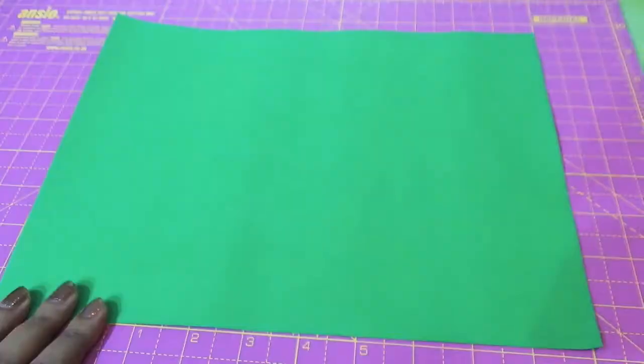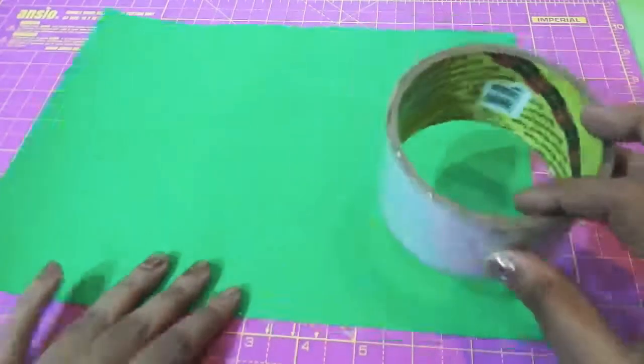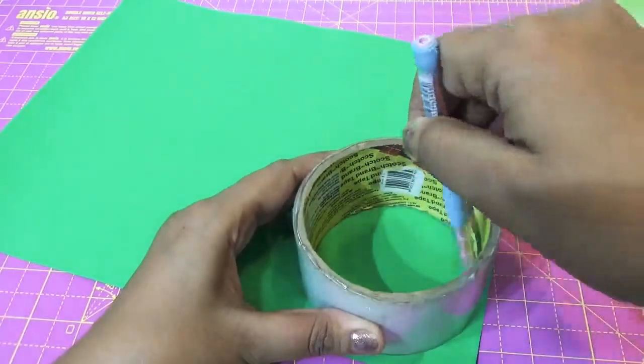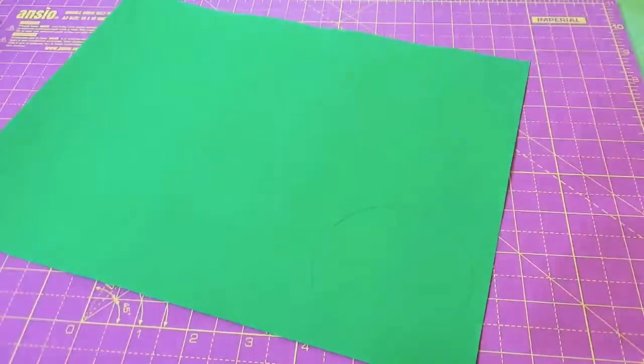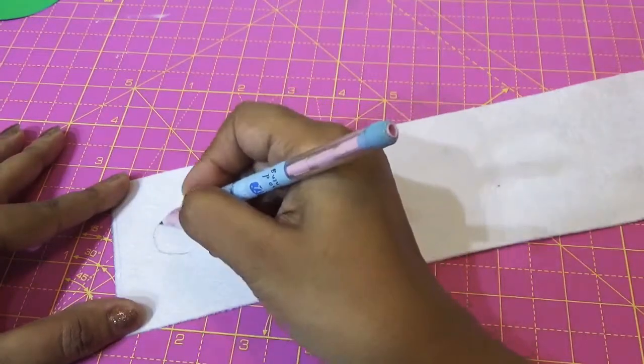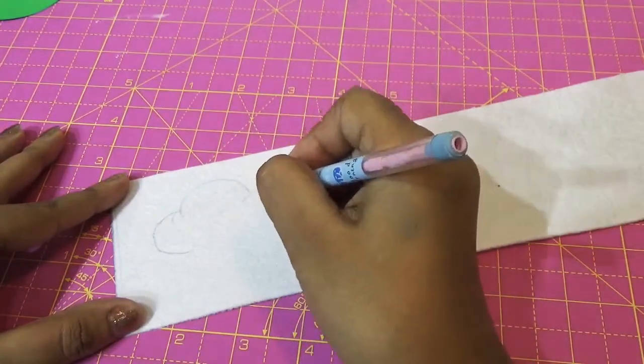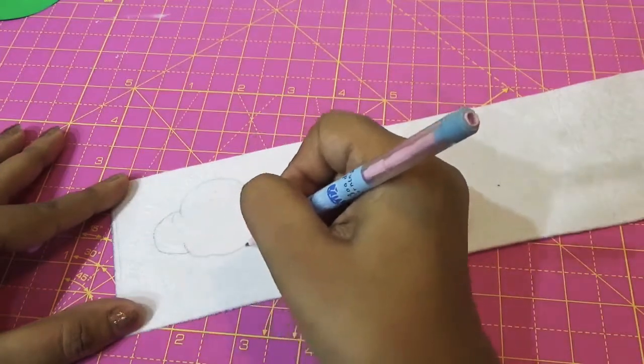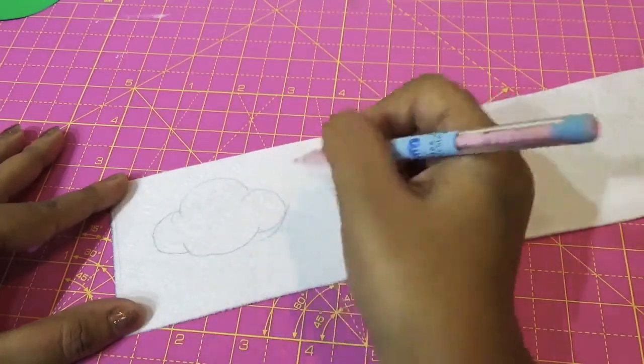We will make a frog body. First, we'll make a round circle and then cut it. I will sketch clouds on the white felt like this, and will make four or five clouds as shown.